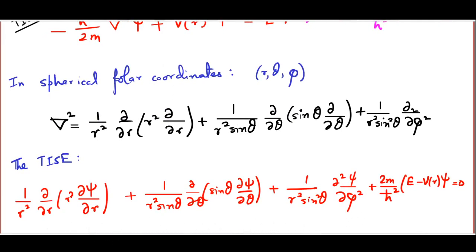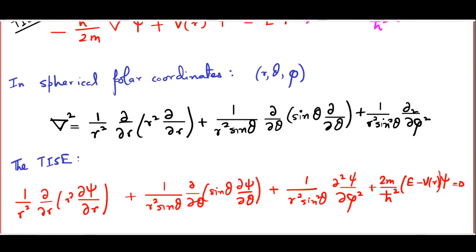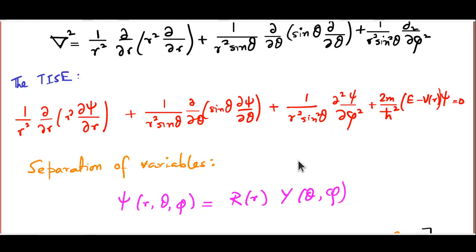If we plug this into the time-independent Schrödinger equation, the first three terms are nothing but the Laplacian of chi, and the final term is twice m by h-cross squared, e minus V of r, times chi. This is an equation we can separate into three ordinary differential equations. The way to do that is to start with the separation ansatz. Rather than separating r, theta, and phi all in one go, we take it in steps. We write chi of r, theta, and phi as a product of two functions: capital R, a function of small r alone, and capital Y, a function of theta and phi.